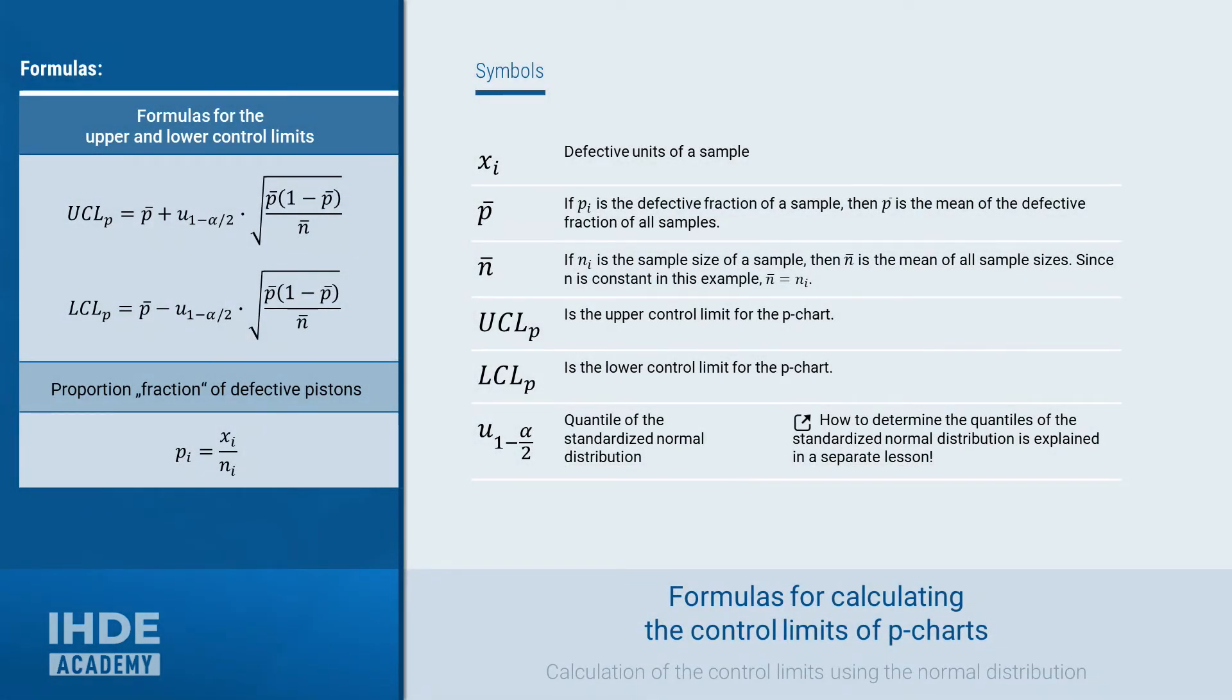To calculate the control limits, we need the formulas shown on the left for the upper and lower control limits. Let's start with the formula below. It is used to calculate the proportion of defective units p in a sample. Xi is the number of defective parts in a sample, and n is the sample size. In the formulas for the control limits, p bar is the mean value of the individual proportions of non-conforming units p in a sample.